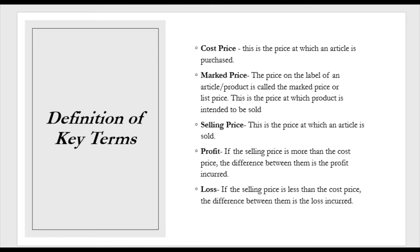There are some key terms that you need to remember. The first one is cost price. Cost price is the price at which an article is purchased. For example, when you go to the supermarket and you purchase a bottle of water for $100, that $100 would be the cost price of that bottle of water.